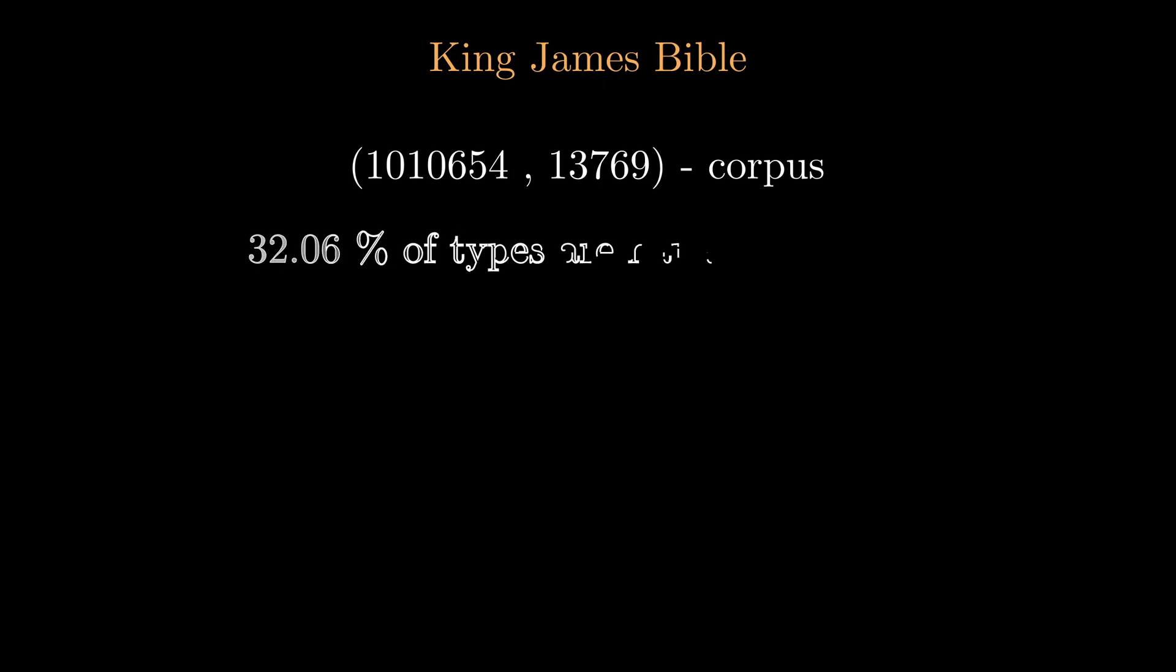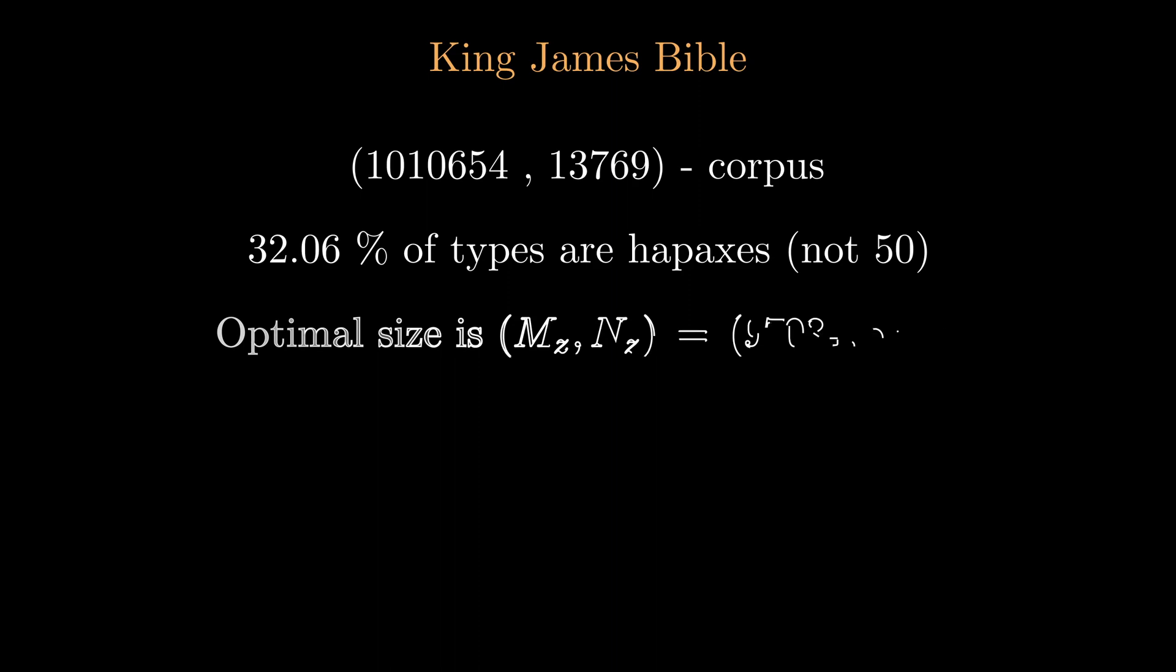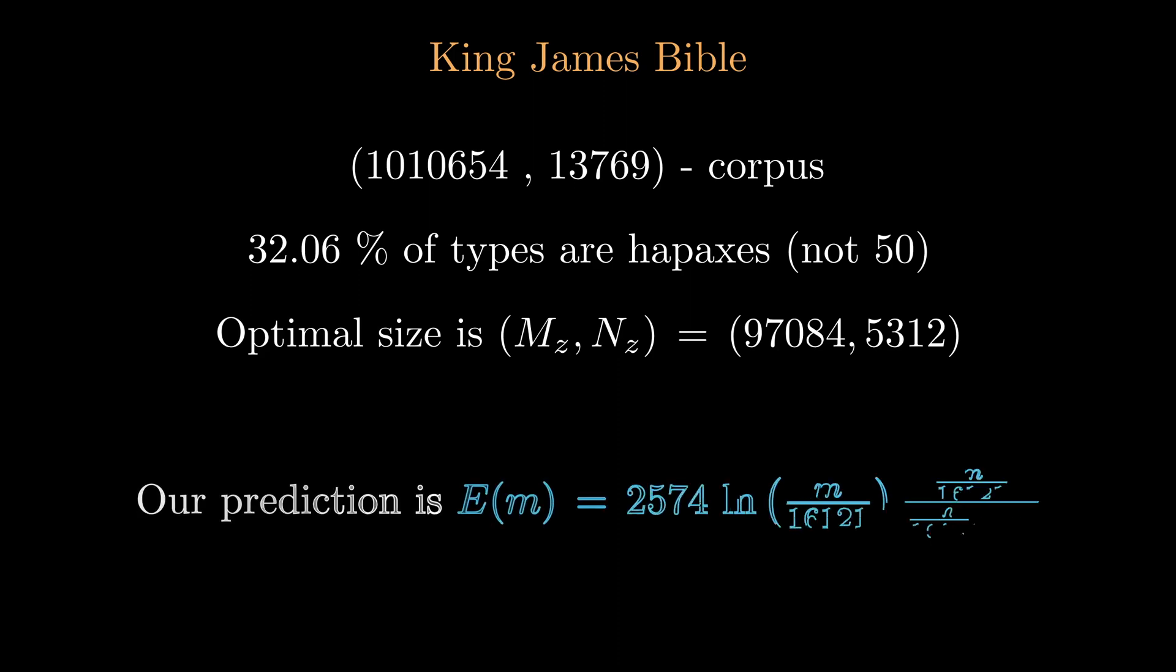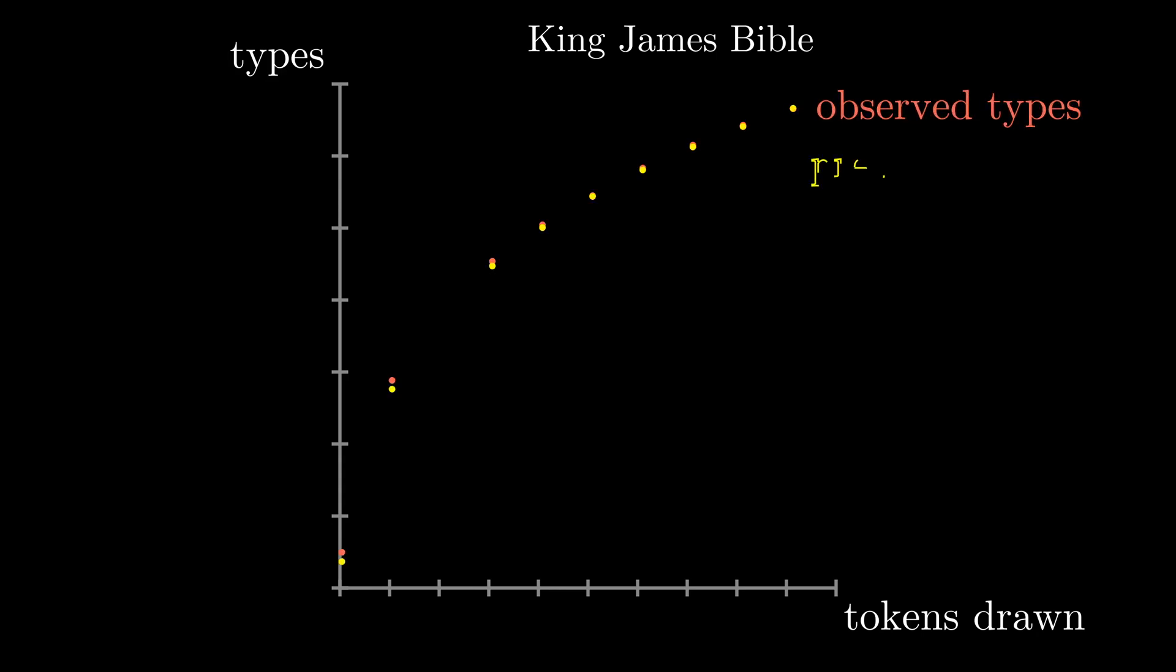For instance, King James Bible is a corpus with over 1 million words and almost 14,000 types. Direct observation tells us that 32% of all words are hapexes, which is below the 50% we need in a perfectly Zipfian corpus. In this case, we pretend the Bible is smaller, and after using all our formulas, we arrived at this tailored expression. Look at how accurately it predicts the real type token distribution of the Bible, or any random sample of it.